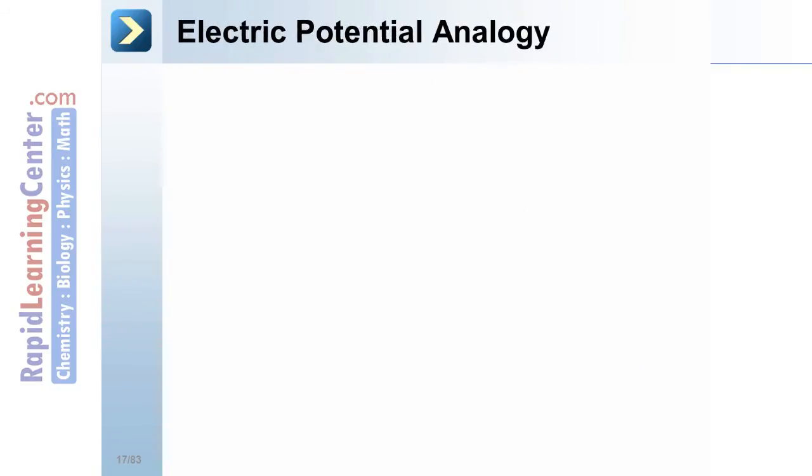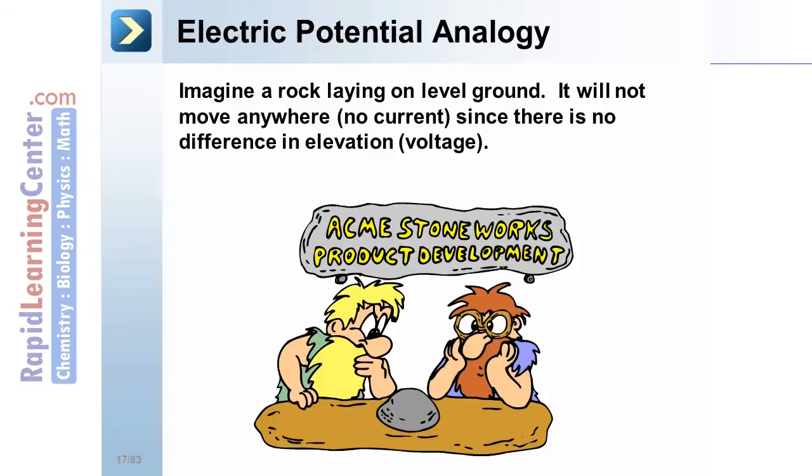Electric potential analogy. Imagine a rock laying on level ground. It obviously will not move anywhere or roll. No current. Since there is no difference in elevation. No voltage or electric potential.